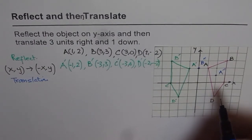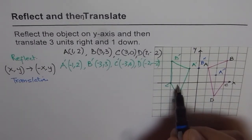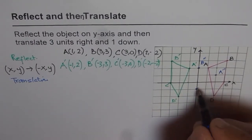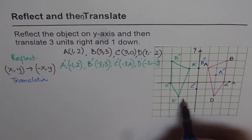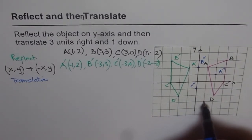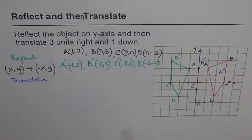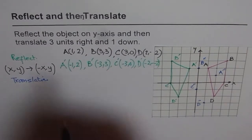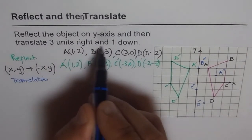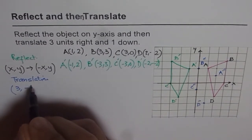C dash will be three units right and one down. So we get C dash as C double dash. D dash will be three right, one down. So that is the location for D double dash. So we have now translated our object after reflection.